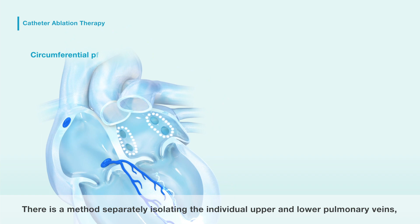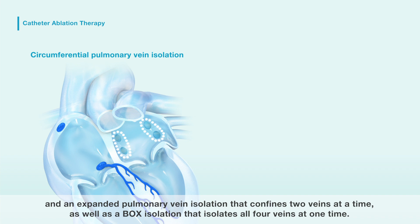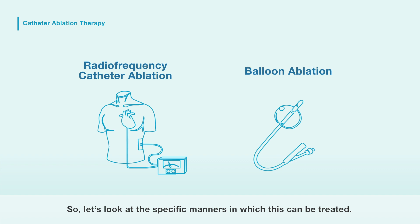This is called pulmonary vein isolation. There is a method of separately isolating the individual upper and lower pulmonary veins, an expanded pulmonary vein isolation that combines two veins at a time, as well as a box isolation that isolates all four veins at one time.